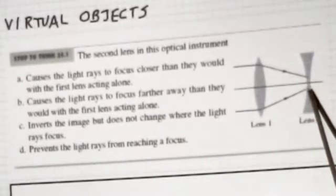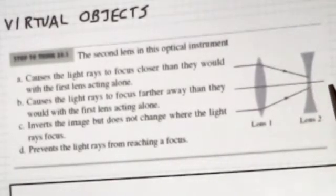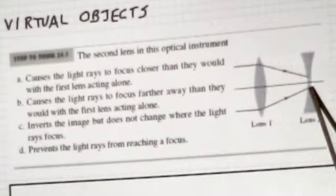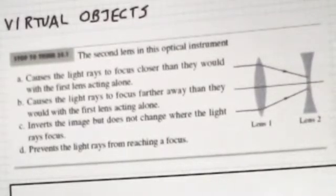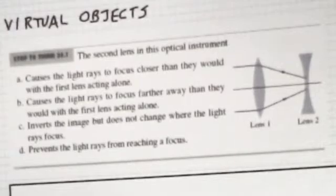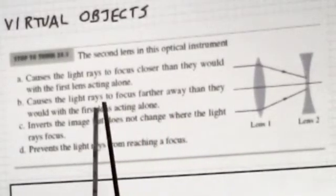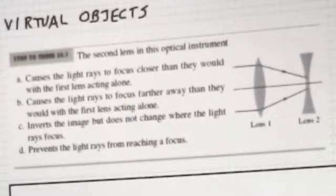The same thing is going to happen to this ray. So if you draw those two lines with that behavior, they would intersect somewhere here. They would normally have intersected here, but after the diverging lens causes them to move away from the optical axis, they will intersect somewhere closer. So D is the right answer.